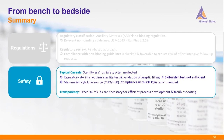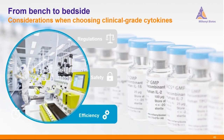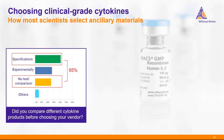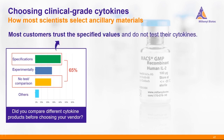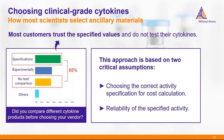Now let's move on to the efficient use of clinical grade cytokines and how you can get the most out of the cytokines you buy. In a survey we conducted, we asked participants how they compare different cytokine products before choosing a vendor. Most customers either trust the specified values on paper or do not test or compare the cytokines at all. This approach is based on two critical assumptions: you must choose the correct activity value for your cost calculation, and the specified activity needs to be reliable.